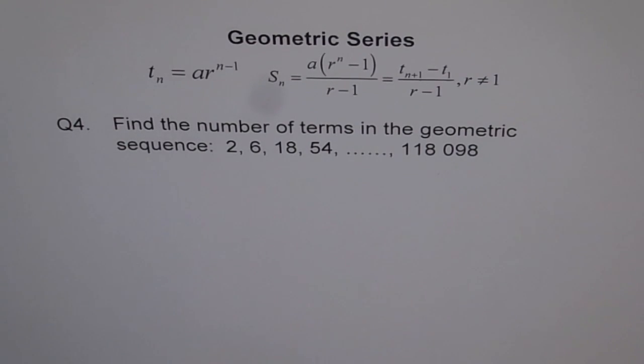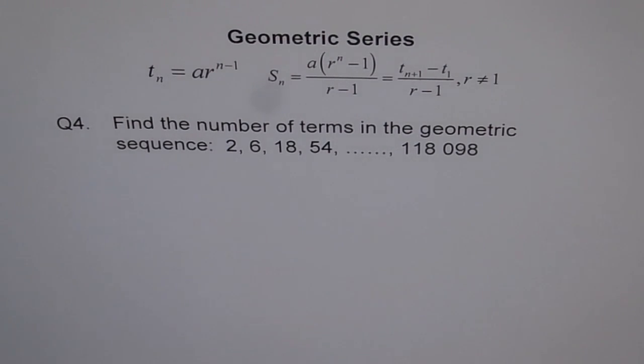Question 4. Find the number of terms in the geometric sequence 2, 6, 18, 54, and so on, till 118,098.